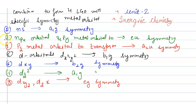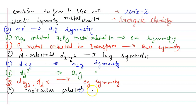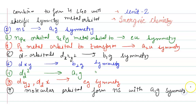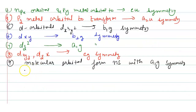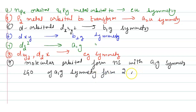The molecular orbital forms from ns with a1g symmetry. The ns orbital and the ligand group orbital of a1g symmetry combine to form two molecular orbitals.